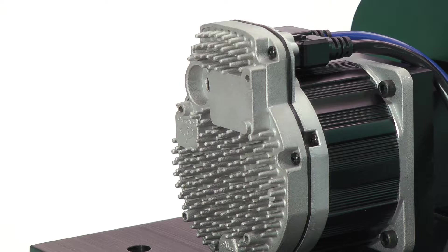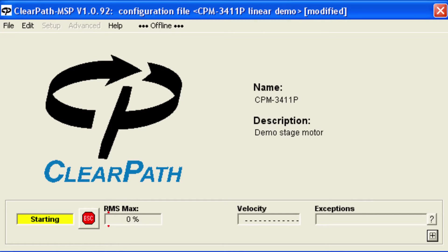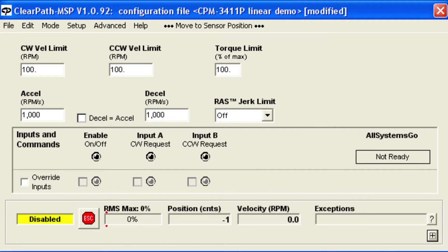To use this mode, connect ClearPath to the MSP software and configure ClearPath with your motion parameters: velocity limit in each direction, acceleration and deceleration rates, and RAS, Teknic's automatic jerk and jerk derivative limiting feature that makes motion transitions very smooth.